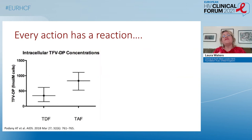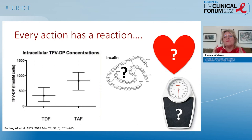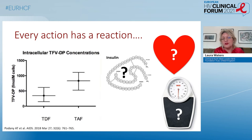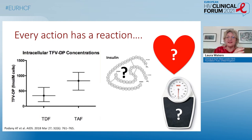Every action has a reaction, and TAF, although undoubtedly highly effective and well tolerated, does produce higher intracellular tenofovir concentrations — plasma concentrations are lower, but intracellular concentrations are higher. This may not have major implications, but we must consider some signals that warrant further exploration: Netherlands cohort data suggesting a higher risk of emergent cardiac events on TAF, though confounders could account for that; and the Tango study suggesting an impact of TAF on insulin sensitivity, because switching away from TAF-based therapy to dolutegravir/lamivudine led to improvements in insulin sensitivity.